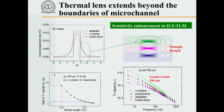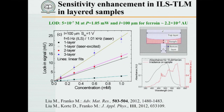Fused silica gives a decrease in signal. Why? Silica has a positive dn/dT while n-octane has a strongly negative dn/dT, so the sign of the thermal lens signal changes. Here we have a positive thermal lens signal in the sample and a negative thermal lens signal in the vicinity — something we don't want. But using organic materials, we can significantly improve sensitivity. We designed a detection cell where we can control the thickness of our sample and use two immiscible solvents.